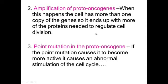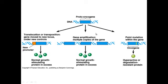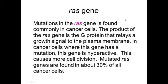You can also have a point mutation in a proto-oncogene. A point mutation causes the proto-oncogene to become more active than it's supposed to be, which causes more cell cycle transcription factors, more cell division, and the cell becomes cancerous. All three of those types of mutations — translocation, amplification, and point mutation — can cause proto-oncogenes to become oncogenes, turning normal cells into cancer cells.